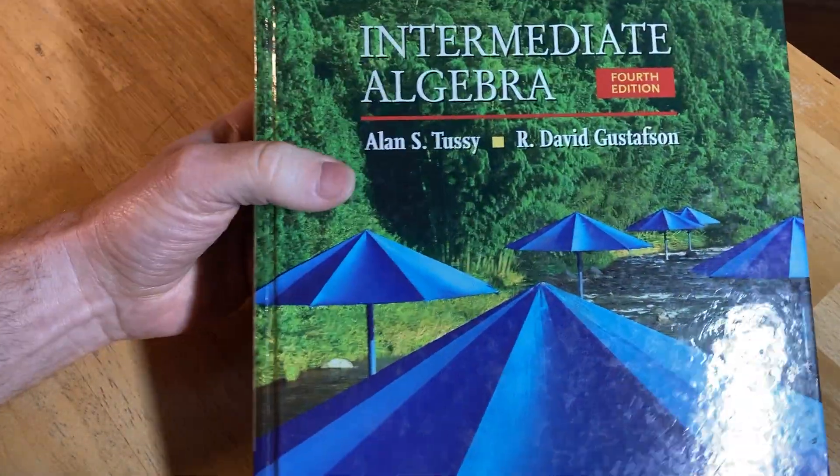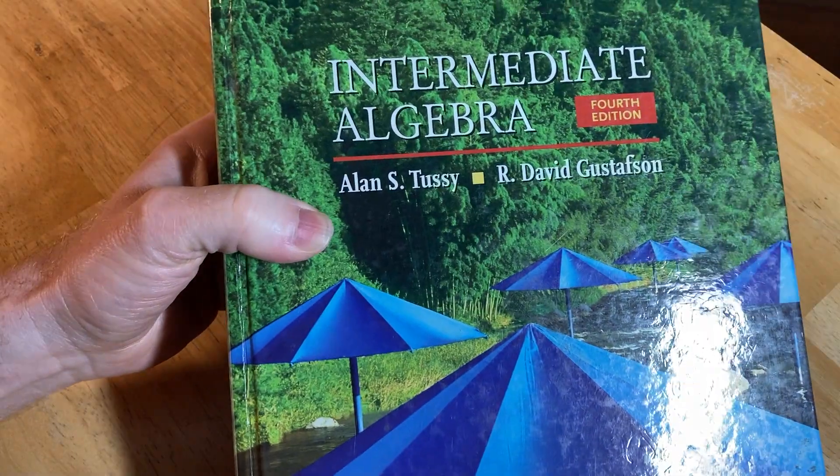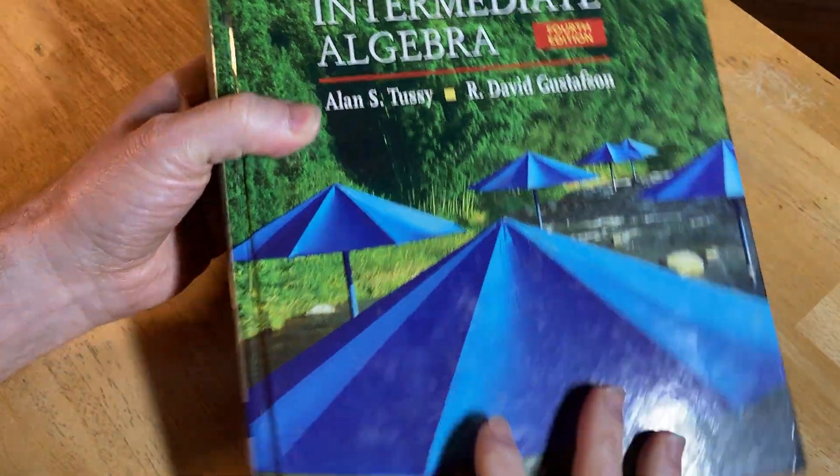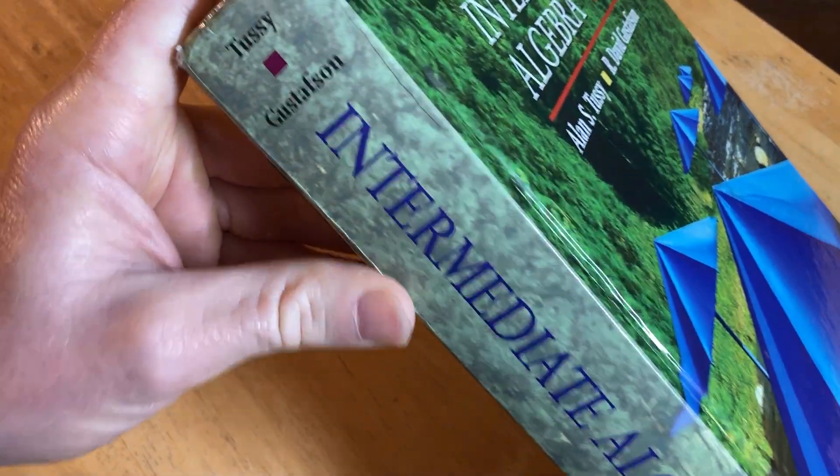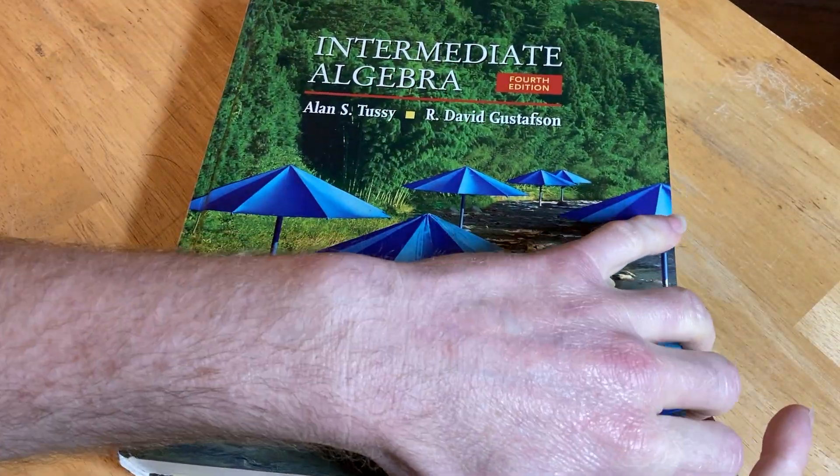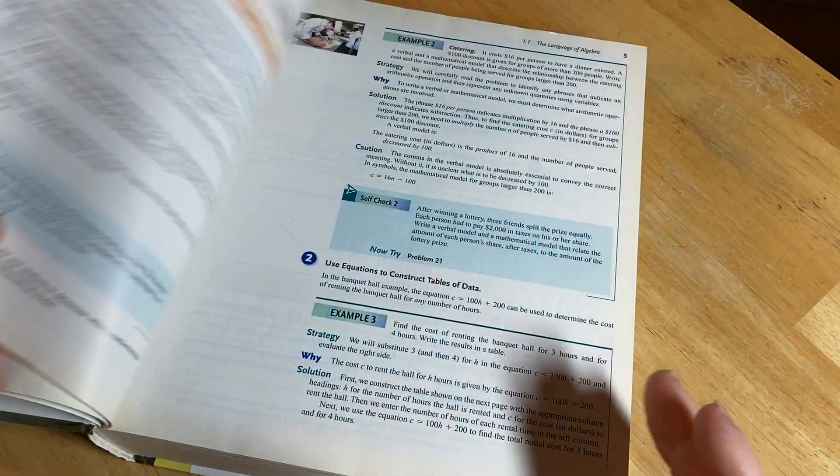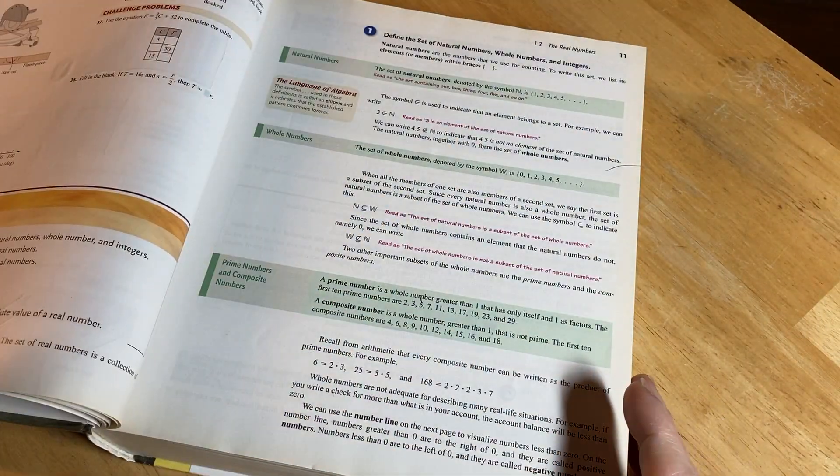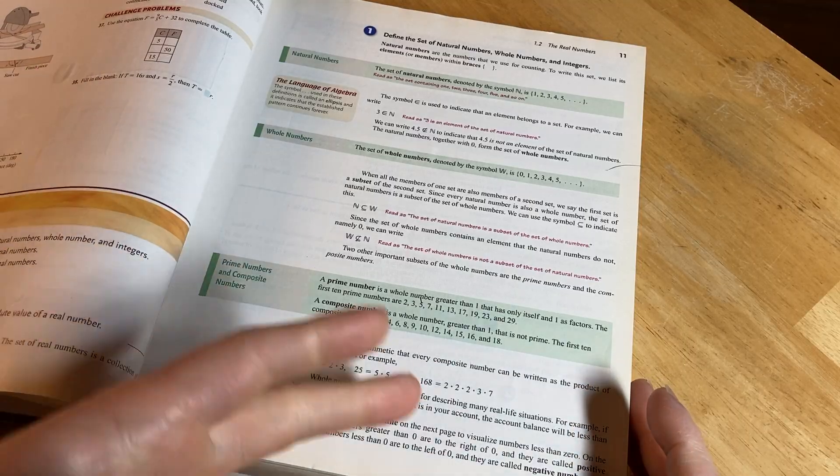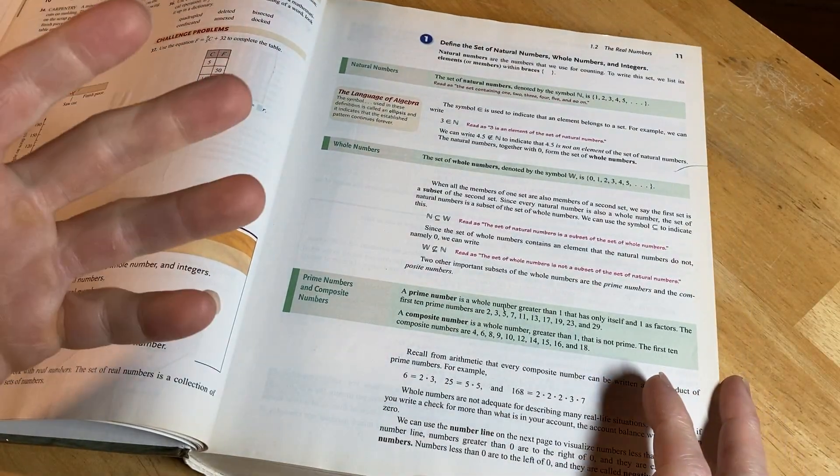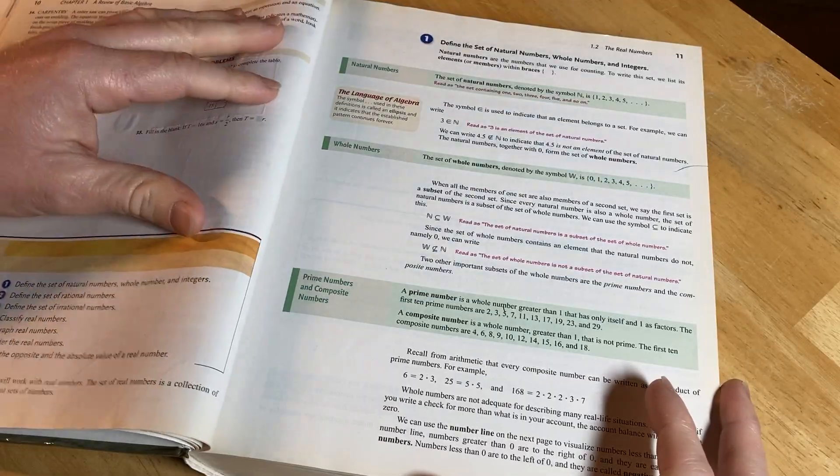So what is this book? This book is Intermediate Algebra. It's the fourth edition. The edition isn't really going to matter. This is the one by Tussi and Gustafsson, and this is a pretty good book on intermediate algebra. It's nice and big and thick, and it's got everything you need to get really good at algebra. I will leave a link in the description of this video in case you want to buy this book. When you click the link, you can buy it new, or you can buy used copies. Just look for used copies, and you should be able to get one at a decent price.